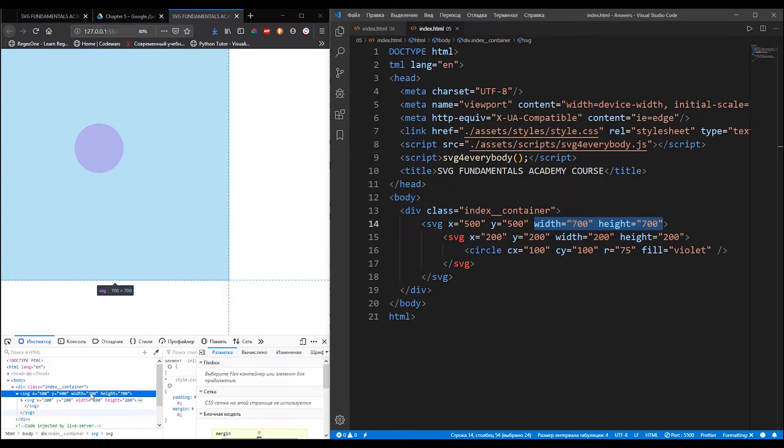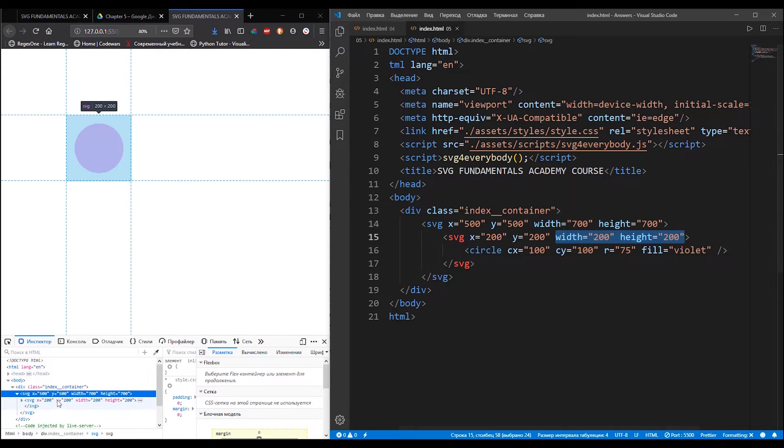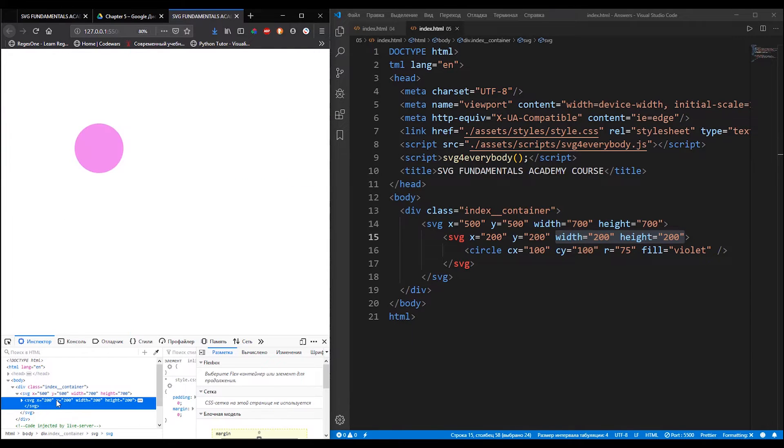The size of the viewport is specified by the height and width geometry properties. And its position is specified by the X and Y geometry properties. Note that the X and Y geometry properties don't affect the outermost SVG element. I will explain why later in this chapter.